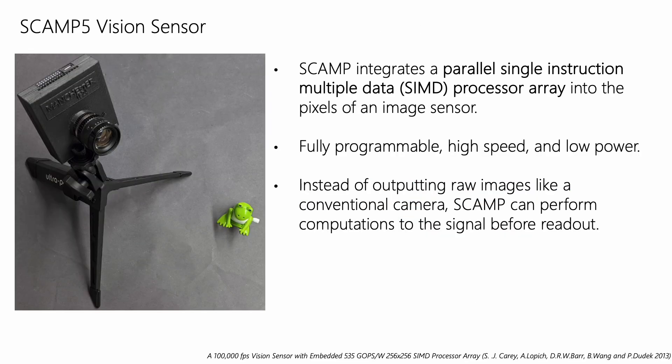To prototype, we utilize the SCAMP5 vision sensor that is paving the way for sensor processors. It integrates a SIMD array into the pixels of the image sensor, allowing us to prototype our encoder. Each pixel has some memory, an ALU, and the ability to communicate with its four neighboring pixels.